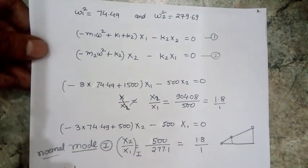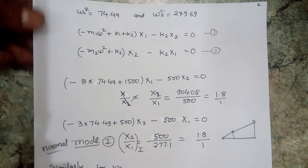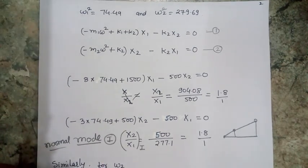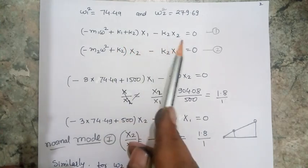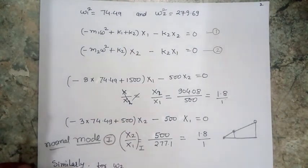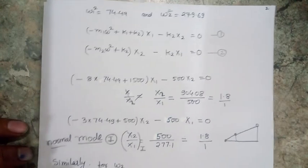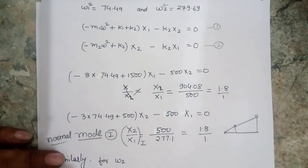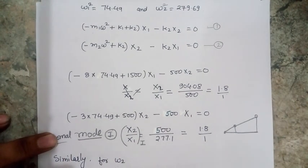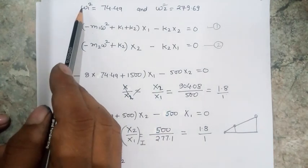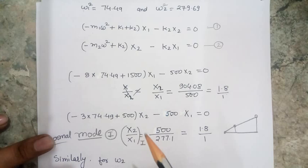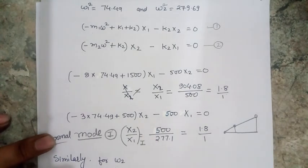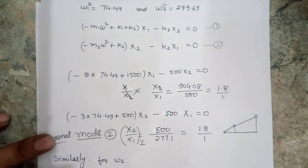After getting the two natural frequencies, the next job is to substitute these back into the governing equations to find the values of X1 and X2. I have two governing equations, and the question arises whether I should put the omega value in the first or second equation. Both equations will give the same result, and we can verify that here.